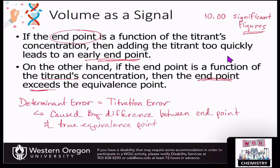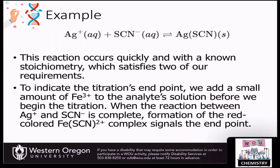The determinant error for the reaction is the titration error, caused by the difference between the endpoint indicated by the indicator and the true equivalence point of the reaction. Here's an example: a reaction between silver cations and the thiocyanate anion forming silver thiocyanate, a solid — this is a precipitation reaction. This reaction occurs quickly, has known stoichiometry, and satisfies at least two of our requirements.